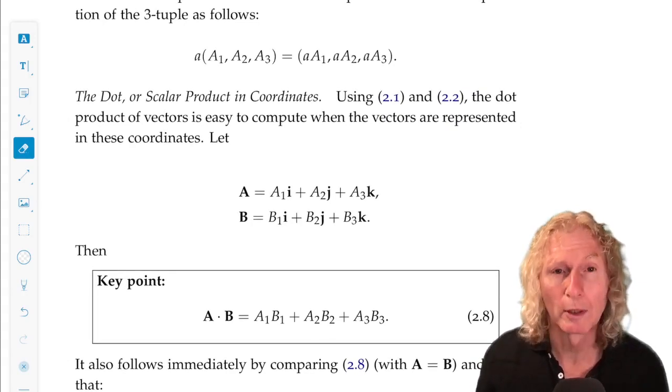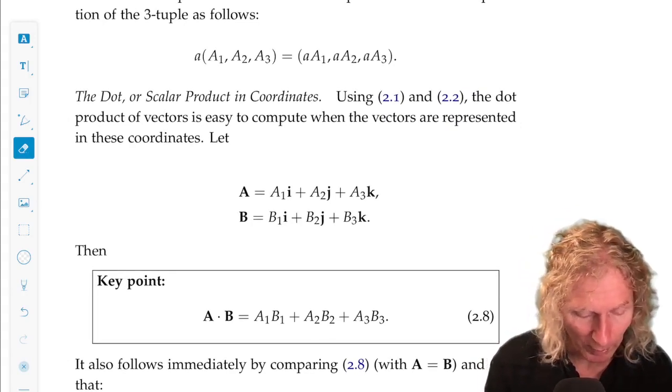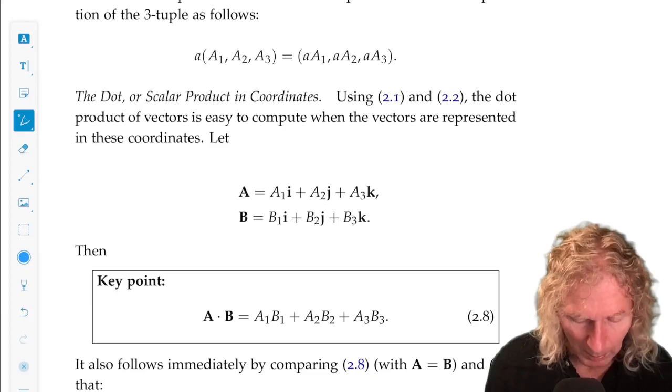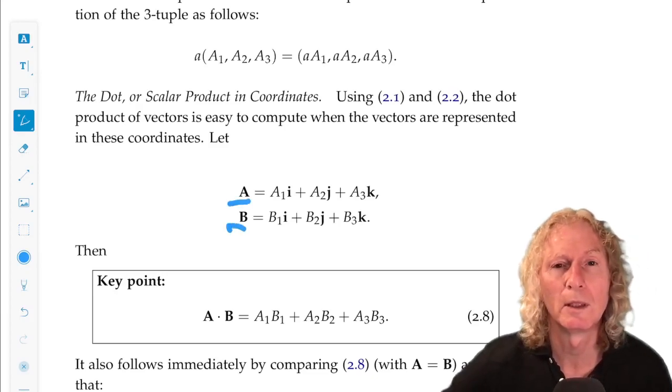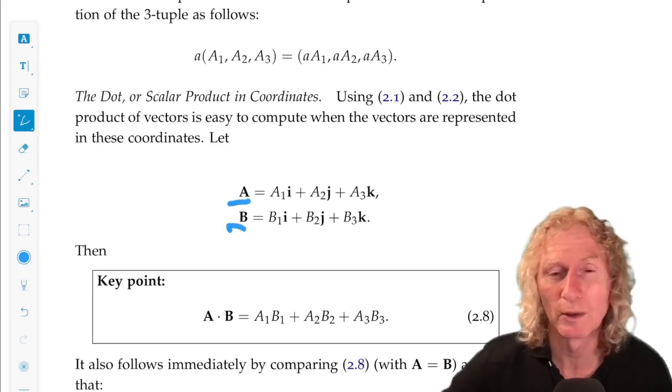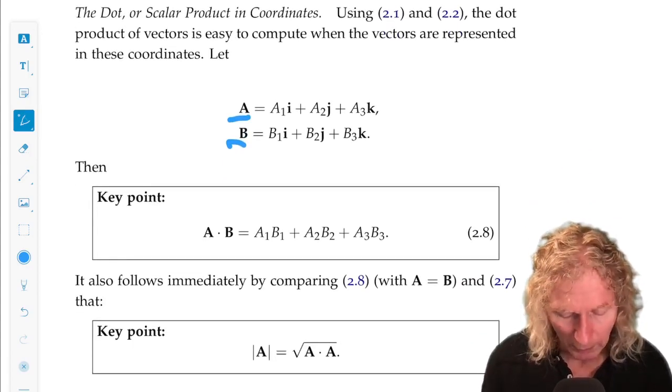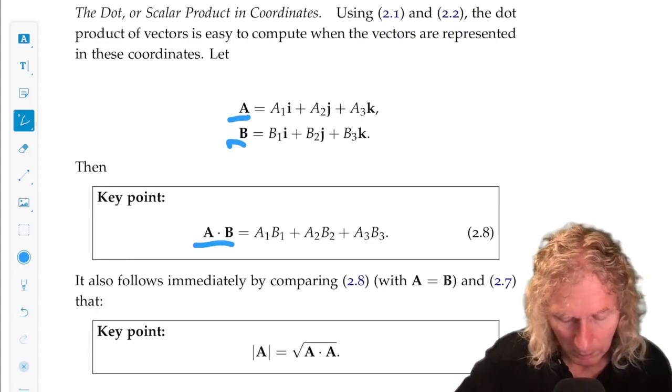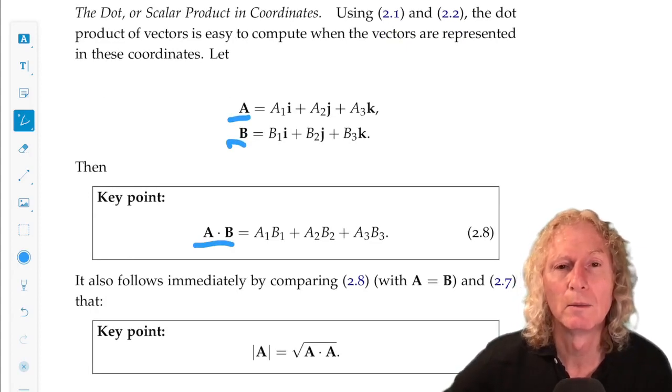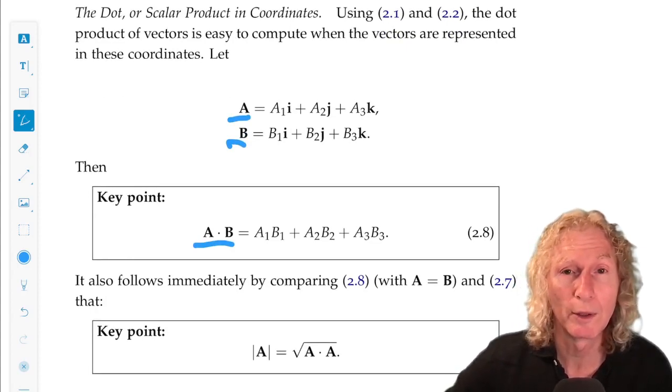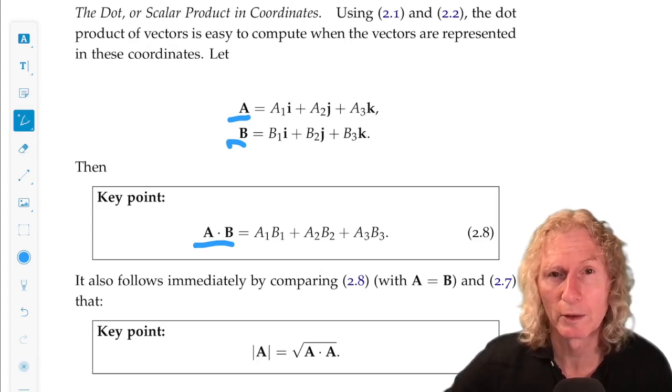So we start with a dot or scalar product in coordinates. We take two vectors, A and B, and represent them in the IJK coordinate system. The dot product is very simple. It's just the sum, the product of the respective components of each vector.